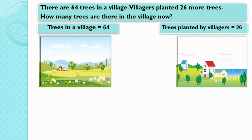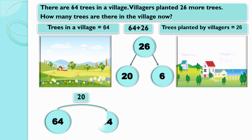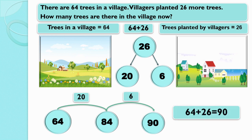We all know plantation is good for us. When we plant trees, the number of trees becomes more and increases, and when there is increase, there is addition. So we will add 64 and 26. We will split 26 into two parts: 20 and 6. Now, 64 plus 20 is equal to 84, and 84 plus 6 is equal to 90 trees. So 90 trees are there in the village now.